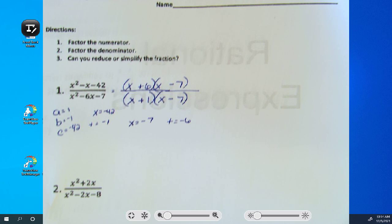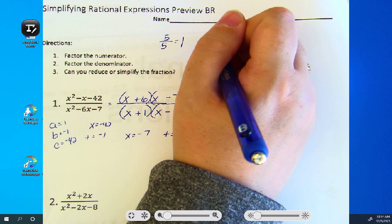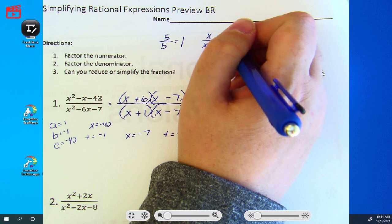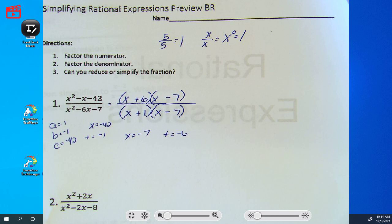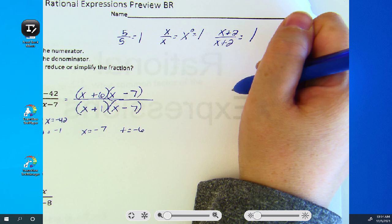So, let's talk a minute before we finish this. If I asked you what 5 divided by 5 is, what would you tell me? 1. If I asked you what x divided by x is, what would you tell me? 1. Because it's x to the 0, which is 1, right? So if I ask you what x plus 2 over x plus 2 is, what do you think it's going to be? No, you're dividing it. So if you take something and divide it by itself, you're still going to get 1.